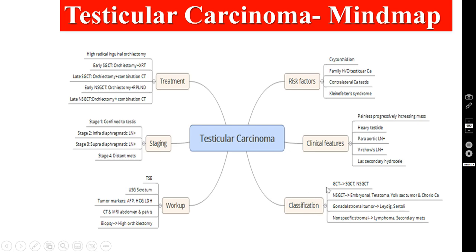Coming to the classification for testicular carcinoma — this is very important. The majority are germ cell tumors, divided into seminomatous germ cell tumors and non-seminomatous germ cell tumors. In seminomatous germ cell tumors there is only one lesion: seminoma. In non-seminomatous germ cell tumors there are four pathologies: embryonal carcinoma, teratoma, yolk sac tumor or endodermal sinus tumor, and choriocarcinoma. Apart from germ cell tumors, there are gonadal stromal tumors — consisting of Leydig cell tumor and Sertoli cell tumor, each having masculinizing and feminizing effects — and non-specific stromal tumors like lymphoma or secondary metastases in the testes.